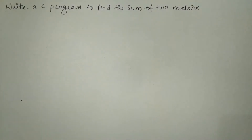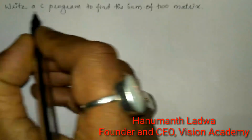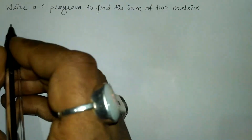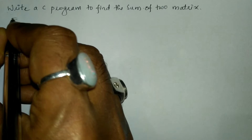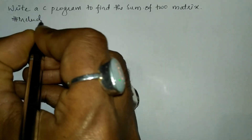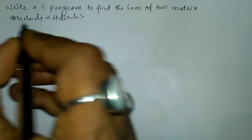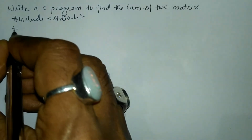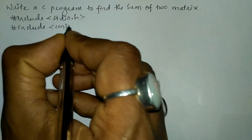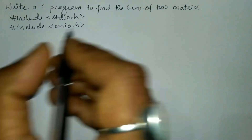Hello and welcome to Vision Academy. My name is Hanmat Ladwa and in this video we are going to write a C program to find the sum of two matrices. Let us write the preprocessor directives: hash include in angle brace, standard input output dot h header file, and the next preprocessor directive hash include in angle brace, console input output dot h header file.